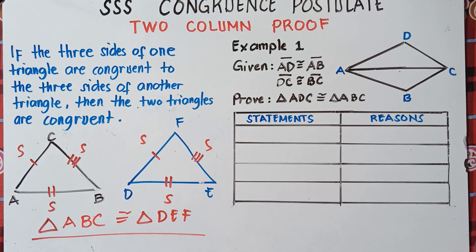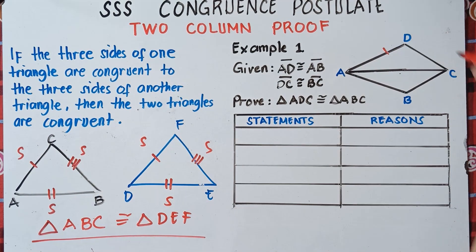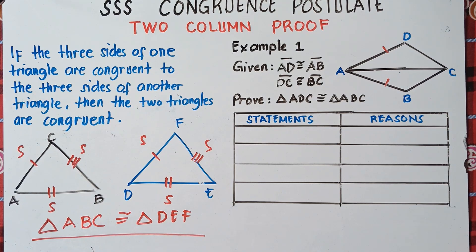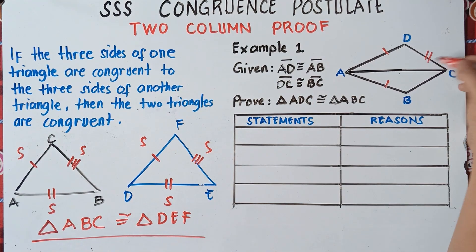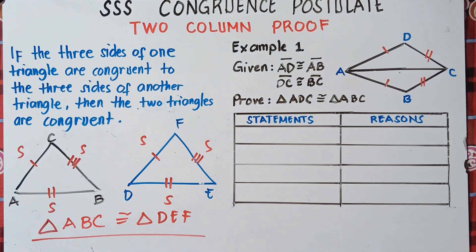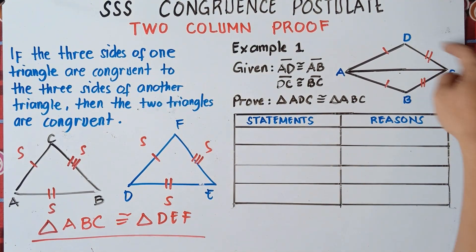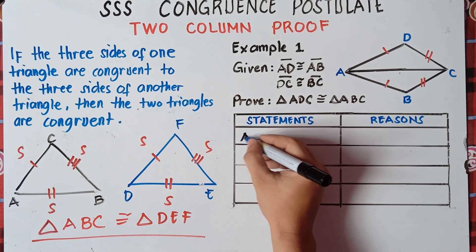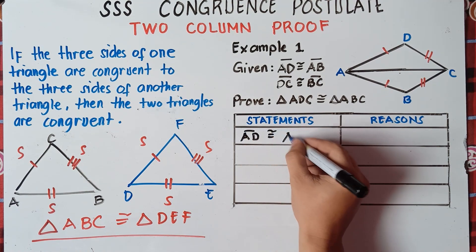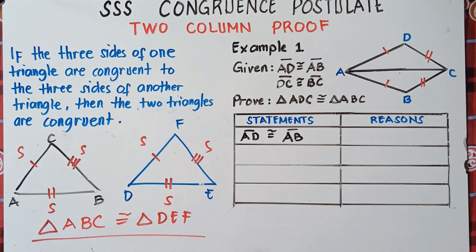Example one: given AD is congruent to AB, and DC is congruent to BC. The first thing you need to do when answering this two-column proof is always write the given. So we have: line AD is congruent to line AB — reason: given. And DC is congruent to BC — reason: given.